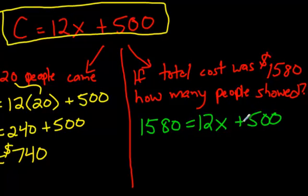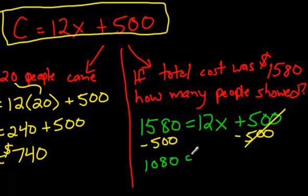And then you start to say, okay, I need to get the X all by itself. Start by getting rid of the 500. Bring it to the other side. Whatever you do to this side, do to this side. $1,580 minus 500. You should be telling me that is 1,080 is equal to 12X. Last step is to get rid of the 12. Divide both sides by 12.